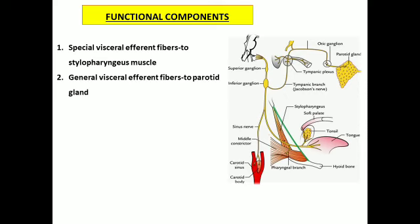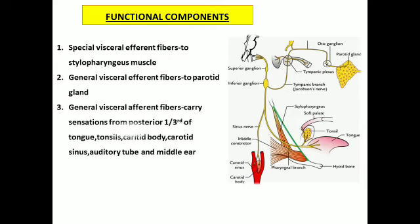The second component is general visceral efferent fibers. These general visceral efferent fibers carry the secretomotor fibers to a salivary gland called the parotid gland. These fibers, which come through the glossopharyngeal nerve, will relay in the otic ganglion and further reach the parotid gland through the auriculotemporal nerve.